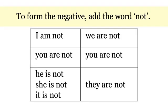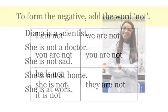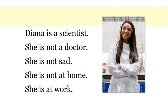If you know the Be verb, you know how to form the negative. Here are some examples. Diana is a scientist. She is not a doctor. She is not sad. She is not at home — she is at work.